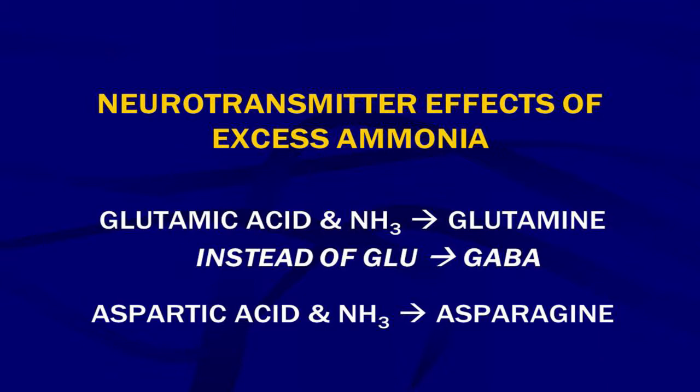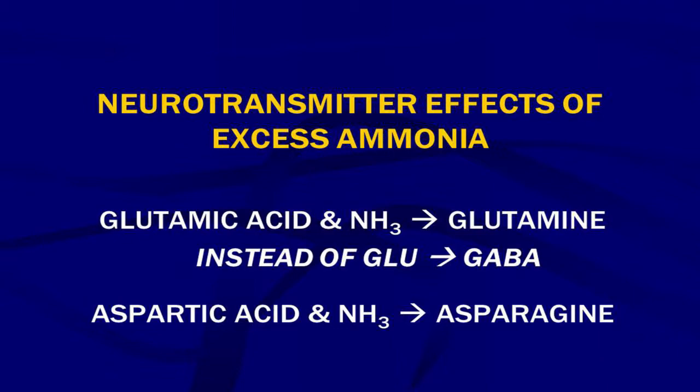Normally, glutamic acid converting to glutamine is a normal pathway. But glutamic acid also gets converted into GABA in a normal pathway. If there's too much ammonia, it short-circuits all the glutamic acid and takes it into glutamine. Similarly, aspartic acid, if there's too much ammonia, becomes asparagine, which is not really a neurotransmitter substance at all.